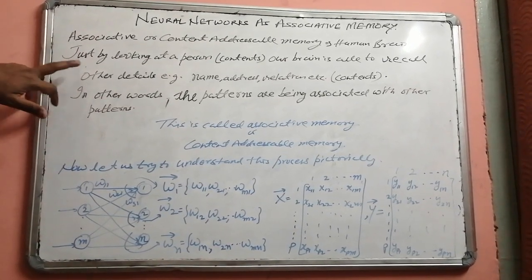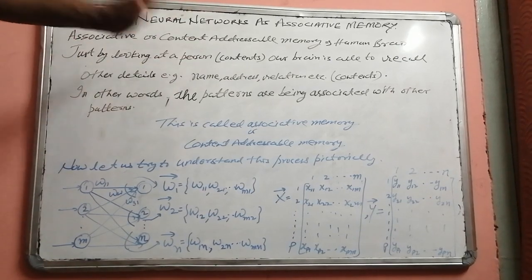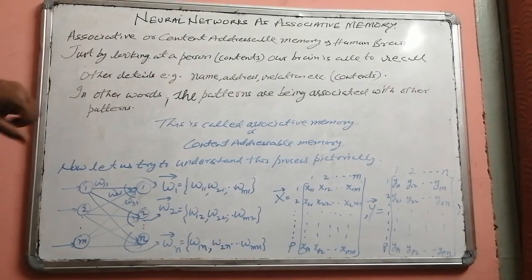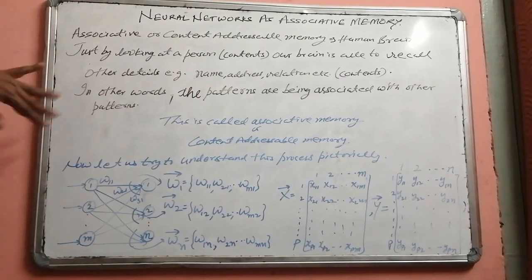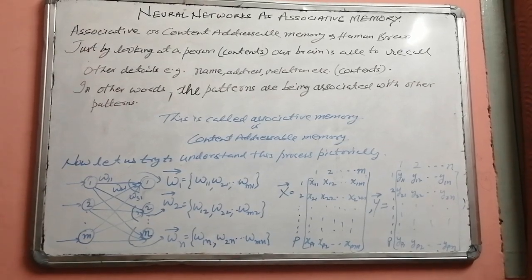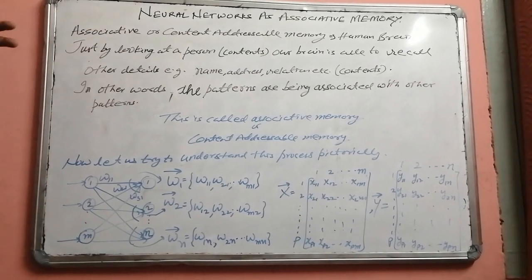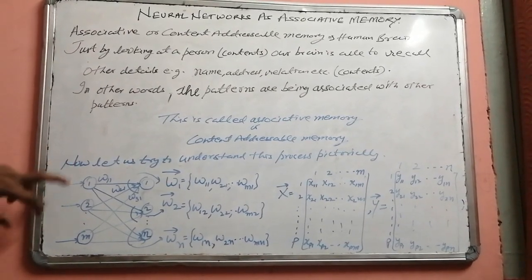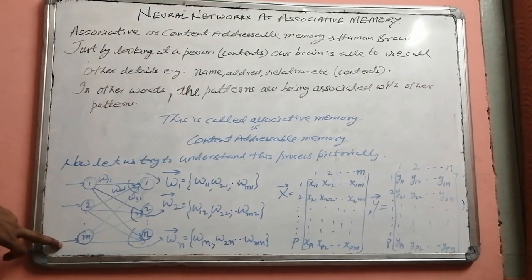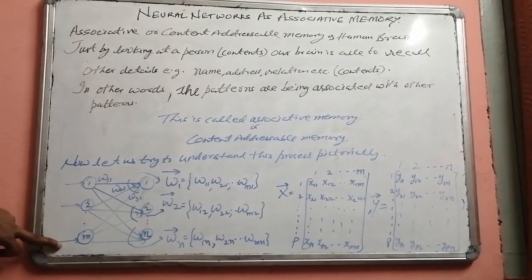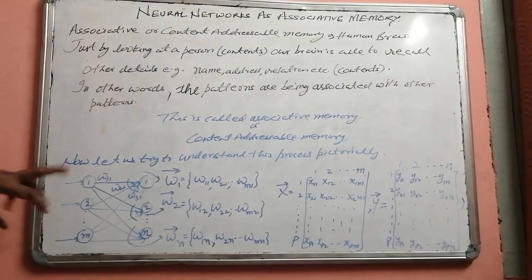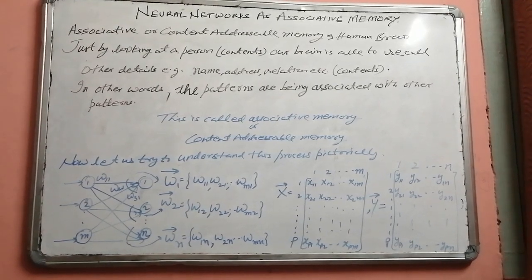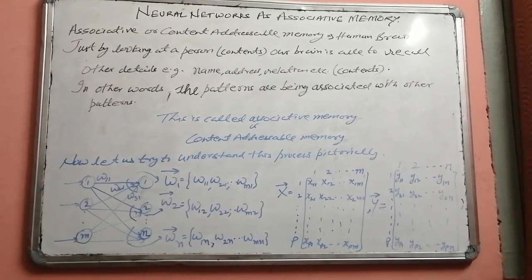So we discussed that we can recall details like name, address, and relationships just by looking at someone's face. In other words, patterns are being associated with other patterns — the content-addressable memories. Now look at a pictorial representation of the working of the brain. There must be an input layer containing M number of neurons if our input pattern has M features, and N neurons in the output layer if the output pattern to be recalled is of N dimensions.